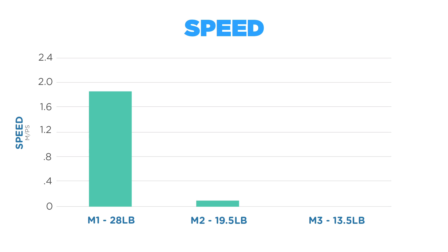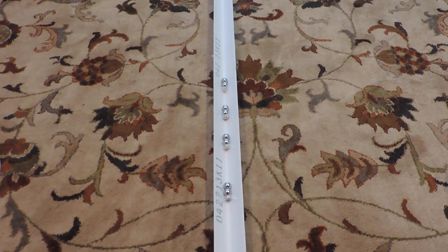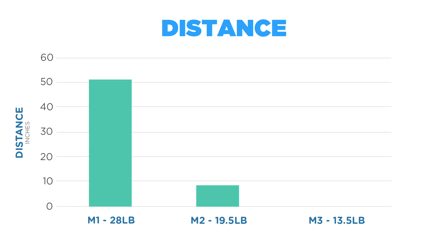The weaker set of magnets failed to build up and conserve enough energy to fire the final projectile. After three trials, the average distance was zero. It is evident that the pull force affected the speed and distance of the projectiles.